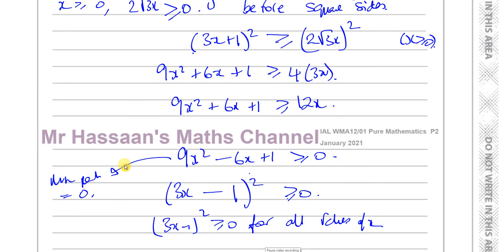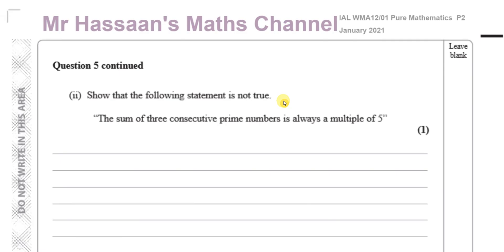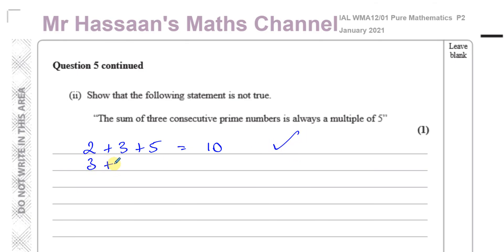Part two says: show that the following statement is not true — 'the sum of three consecutive prime numbers is always a multiple of five.' We need to find a counter-example. Let's try: 2 + 3 + 5 = 10, which is a multiple of five. Then 3 + 5 + 7 = 15, which is also a multiple of five.